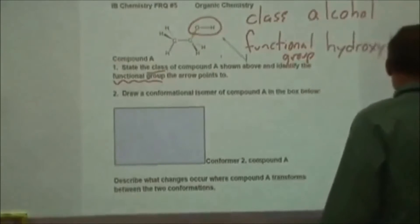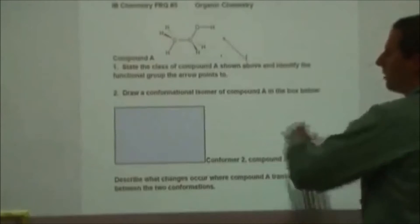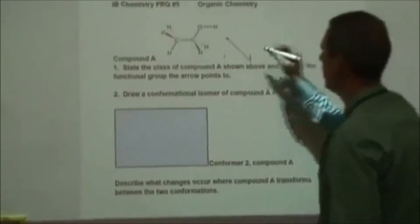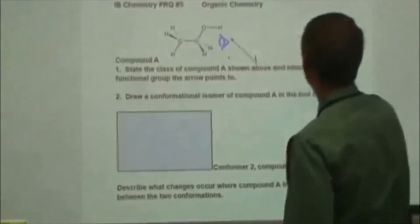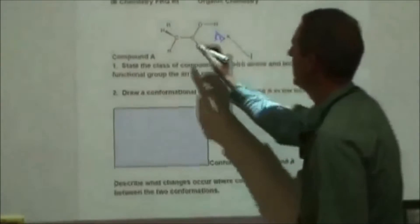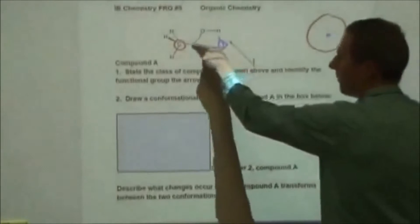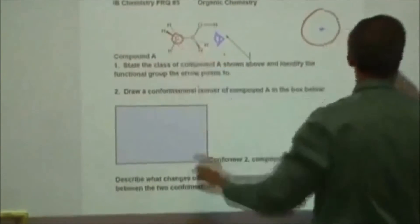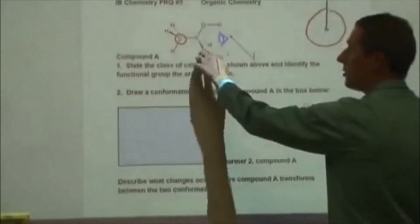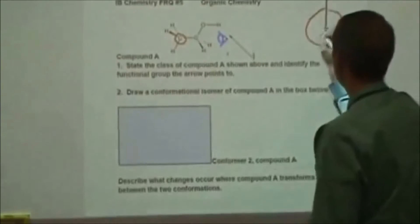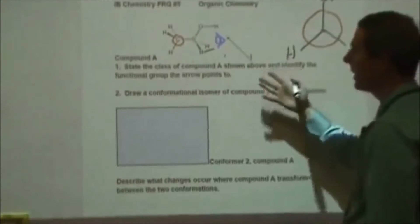In part two it says draw a conformational isomer in the box below. To do that, we're going to pretend that we have an eyeball staring down this particular molecule, looking right at the first carbon, and then through to the second carbon. So our vision is going this way. We would see a hydroxyl group going up, this hydrogen in front of the plane going down and to our left, and the other one down and to the right because it's behind the plane of the board.